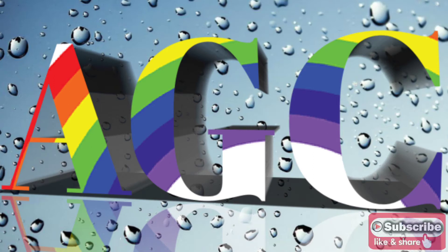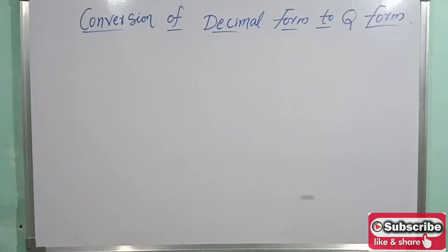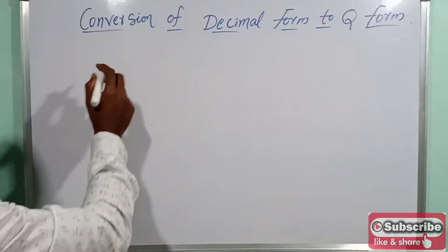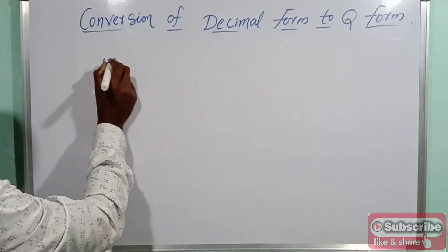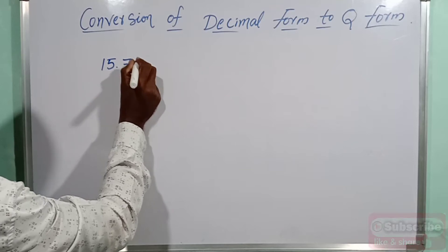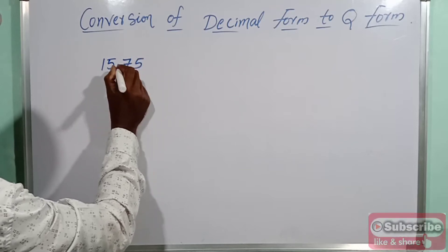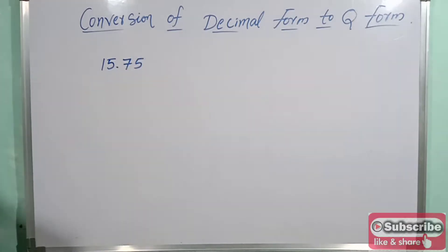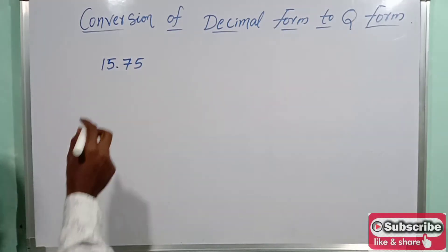Hello, see here. Now I am going to explain conversion of decimal form to rational form. For example, I am taking 15.75, which is in decimal form.